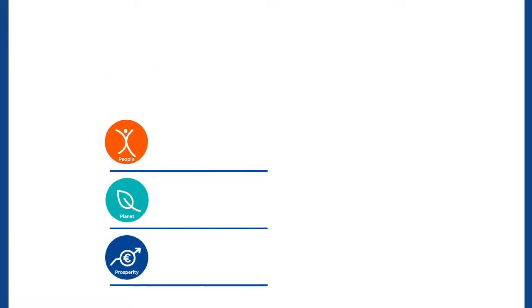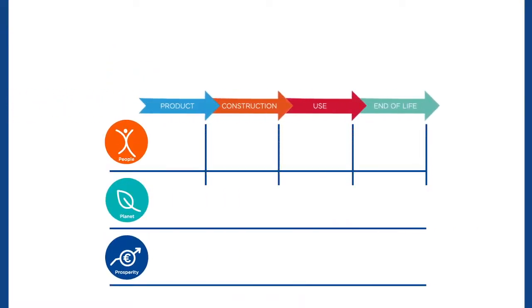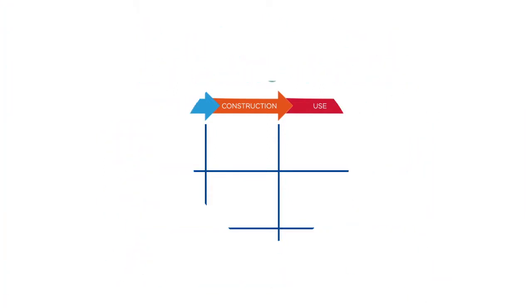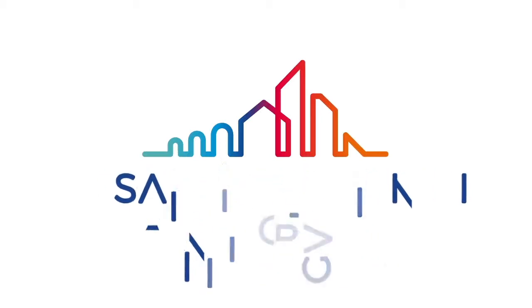Taking care of people, the planet and prosperity at every stage of the building life cycle. This is Saint-Gobain's definition of sustainable habitat. Saint-Gobain, a key ingredient in the well-being of each of us and the future of all.